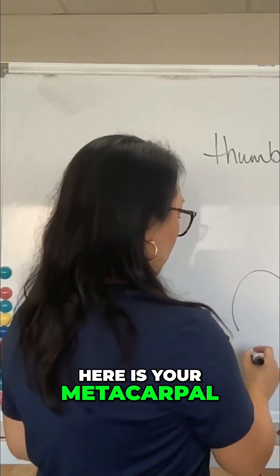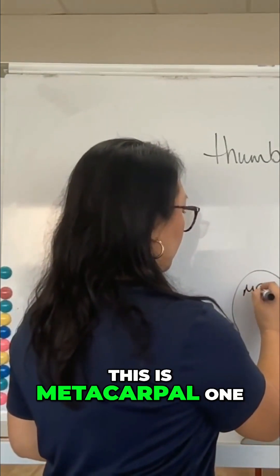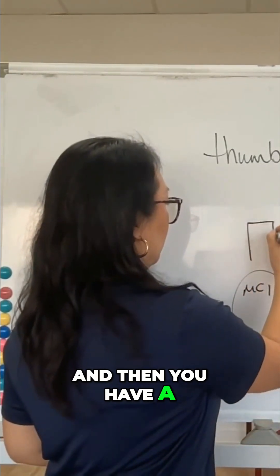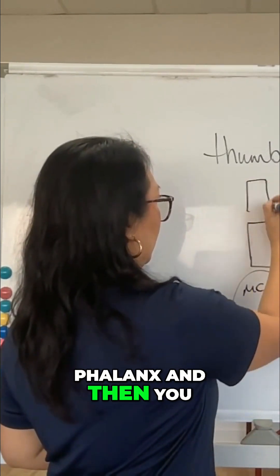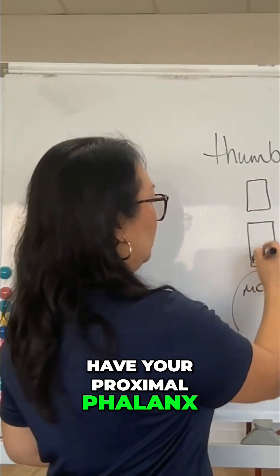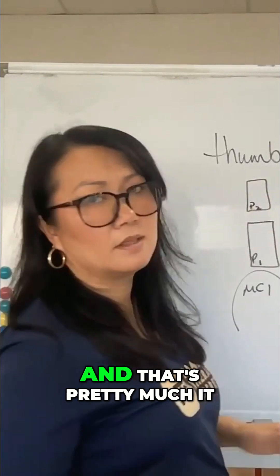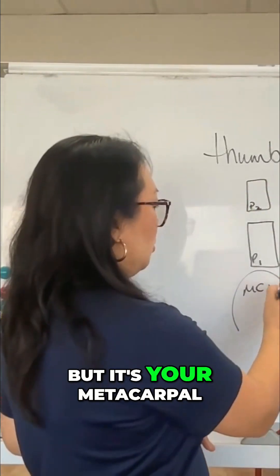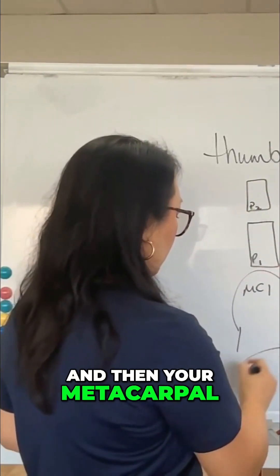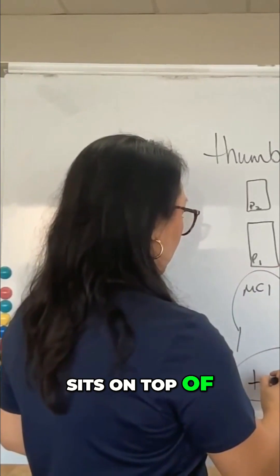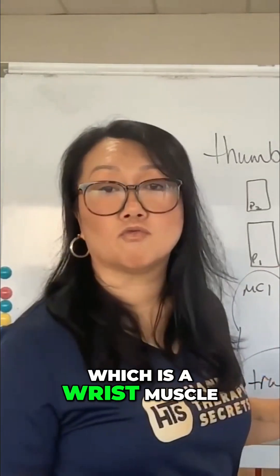Here is your metacarpal. This is metacarpal 1, and then you have a phalanx — your proximal phalanx and your distal phalanx, and that's pretty much it. Your metacarpal sits on top of your trapezium, which is a wrist bone.